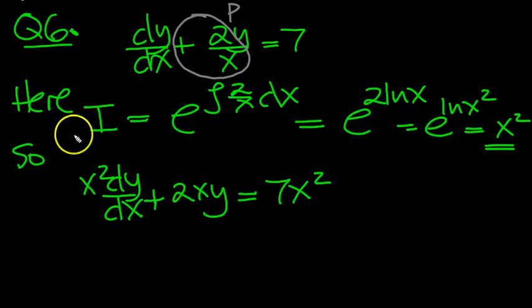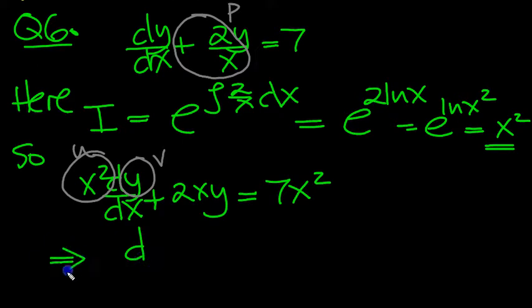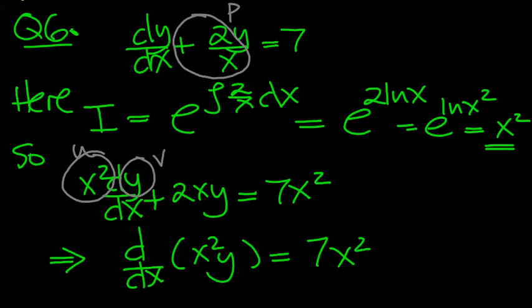Now, we circle the u and the v. Here's the u, it's always in this position. Here's the v. So, now we can write d/dx of u times v, these two, x squared y, is equal to what's on the right-hand side, 7x squared. Nice, easy problem now.